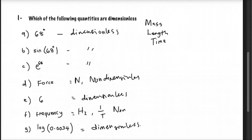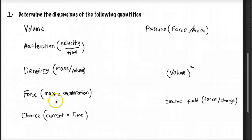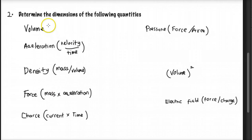That's question 1. We move to the next question. Question 2 wants us to determine the dimension of the following quantities. The first one is volume. Volume is in cubic meters, and since meter corresponds to L, the dimension is L cubed.